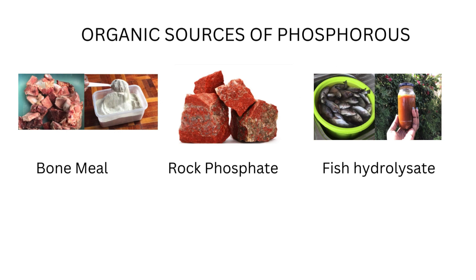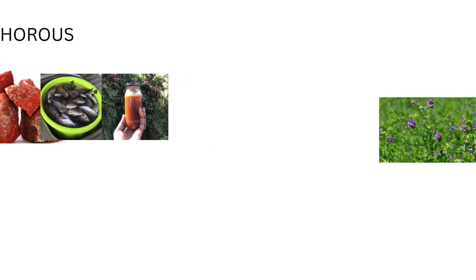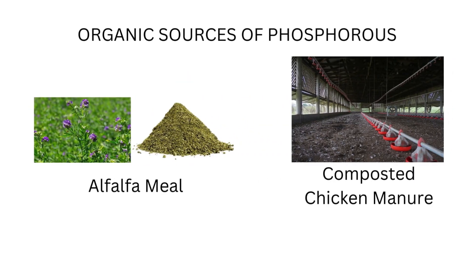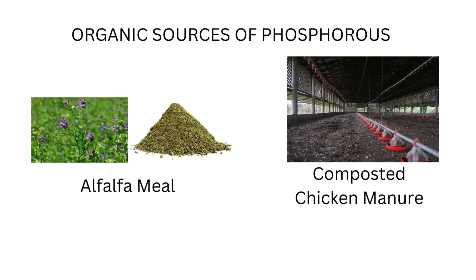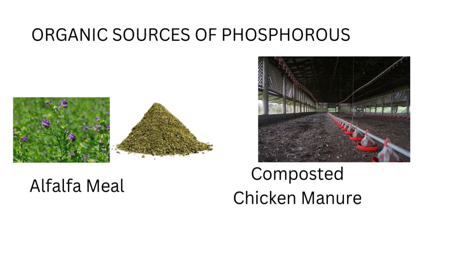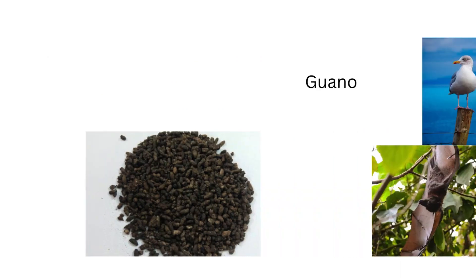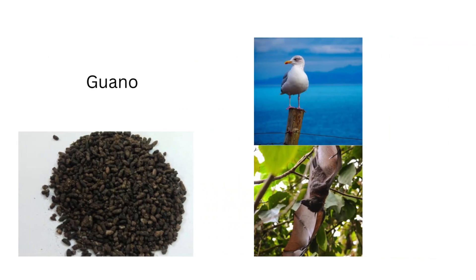Some of the organic sources of phosphorus include bone meal, rock phosphate, fish hydrolysis fertilizer, alfalfa meal, and well-decomposed chicken manure. Finally, we also have guano, which is just accumulated excrements of seabirds or bats.